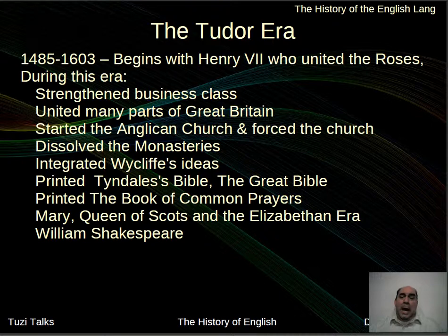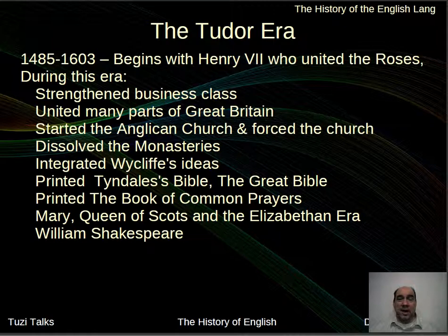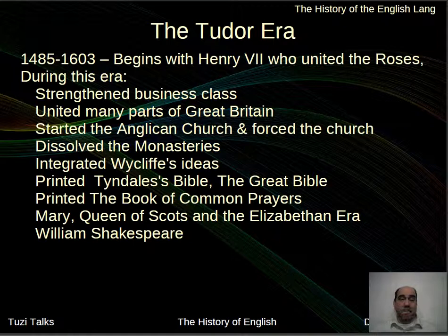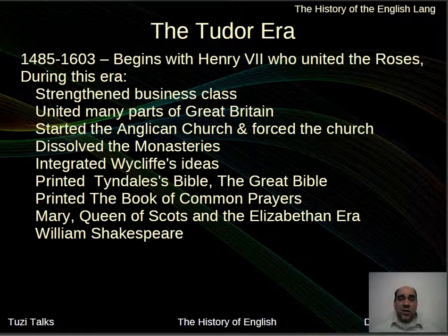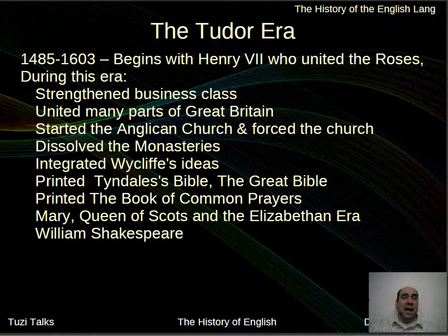During the reign of the Tudors, we see the strengthening of the business class — what was previously the merchant class. With the advent of printing and other events, the growing business class is making money and expanding possibilities. We also have the uniting of different parts of Great Britain: Wales, East Anglia, and the Southern sections are now being controlled by one king, though Scotland in the north remains a separate entity.